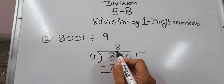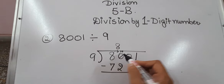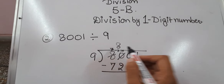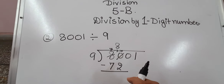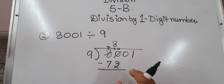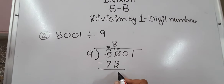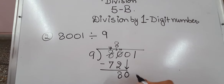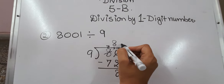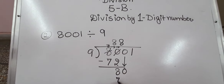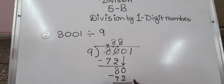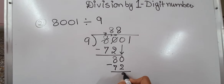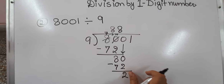After subtracting, this will become 10, then 7, then 8. Now this 0 comes down. Again we can use 8 here — 9×8 is 72. Subtract it again. Now again we will have 8 as a remainder.